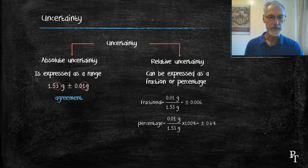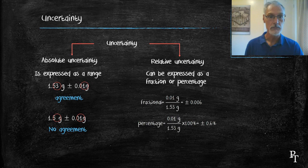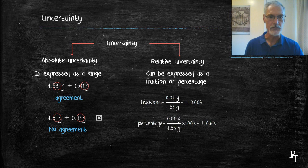Here's an example of something that doesn't have agreement. The 1.5 is only recorded to the tenths column, but my uncertainty is good to the hundredths column. This is not what you want to do. You want to make sure that you have agreement.